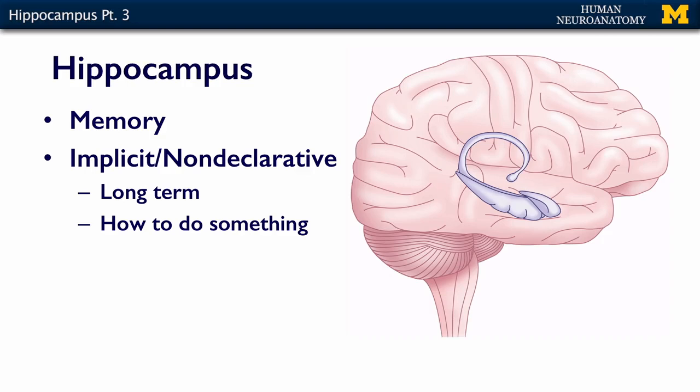The other type of long-term memory is implicit memory, or non-declarative memory. This is basically how to do something — how to ride a bike, how to use a hammer — all of those things that don't necessarily have words involved but are motor memories. These are implicit memories and they are still long-term memories.